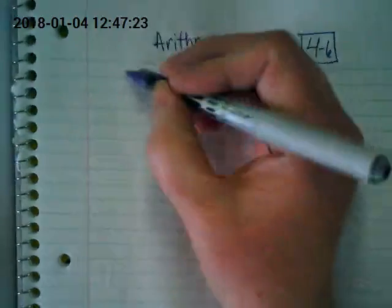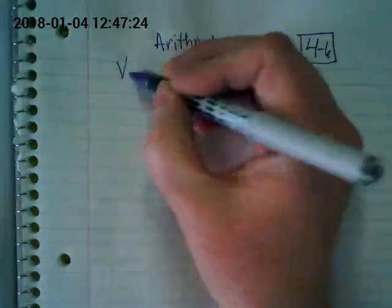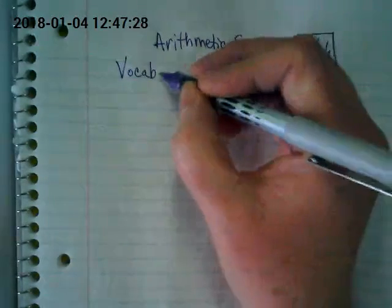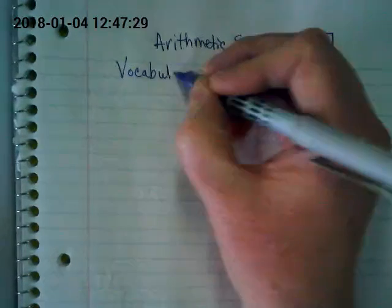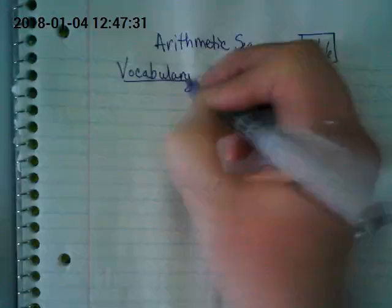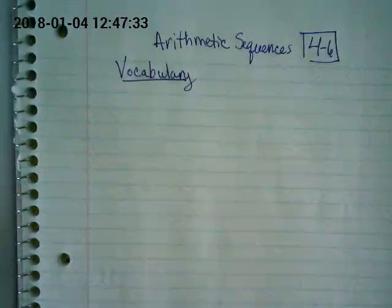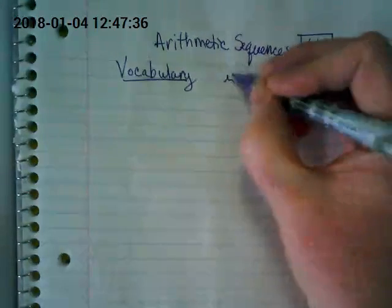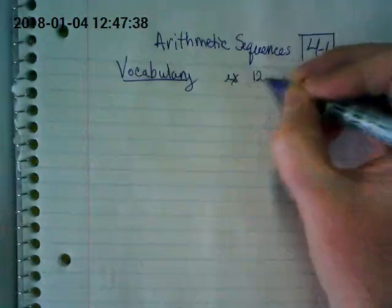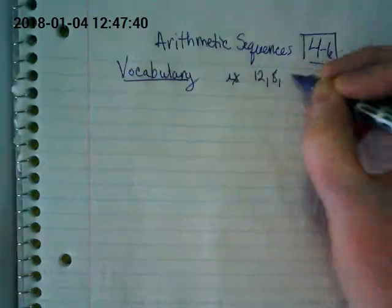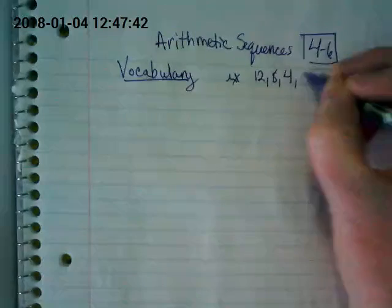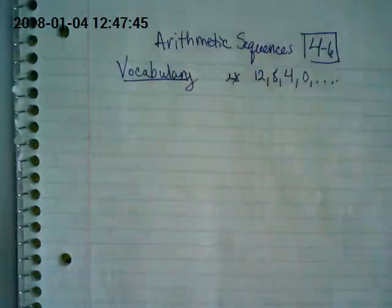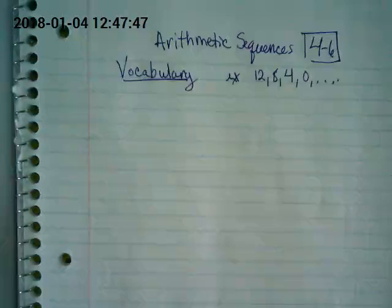We've got some vocabulary to do before we can start our work in section 4-6. Let's write a vocabulary section on our page. I'm going to write an example of an arithmetic sequence at the top of the page, and then we'll talk about what is a sequence and how an arithmetic sequence is different from others. That one up there is an arithmetic sequence.